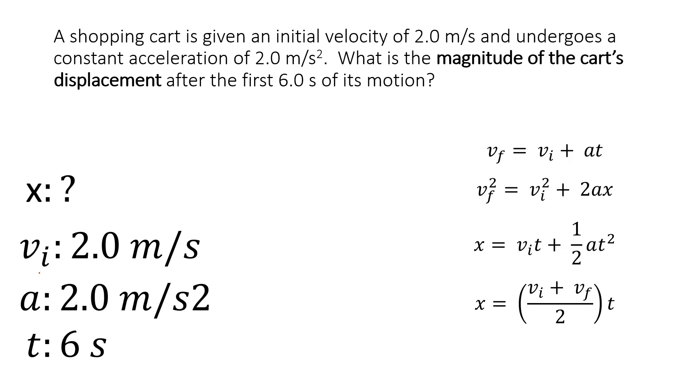We have an x, we have a v_i, we have an a, and we have a t. We want to look through and find an equation that has those four things only. We can't pick this one because it has a v_f. That one also has a v_f. That one too. So that leads you to the right equation, which has everything we need.